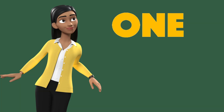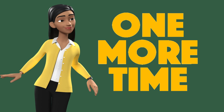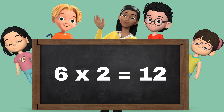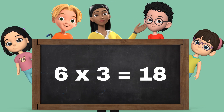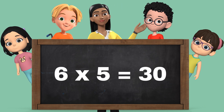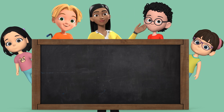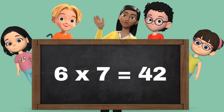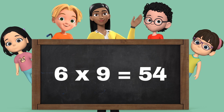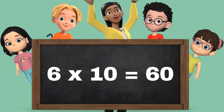Let's repeat it one more time. 6 ones are 6, 6 twos are 12, 6 threes are 18, 6 fours are 24, 6 fives are 30, 6 sixes are 36, 6 sevens are 42, 6 eights are 48, 6 nines are 54, 6 tens are 60.